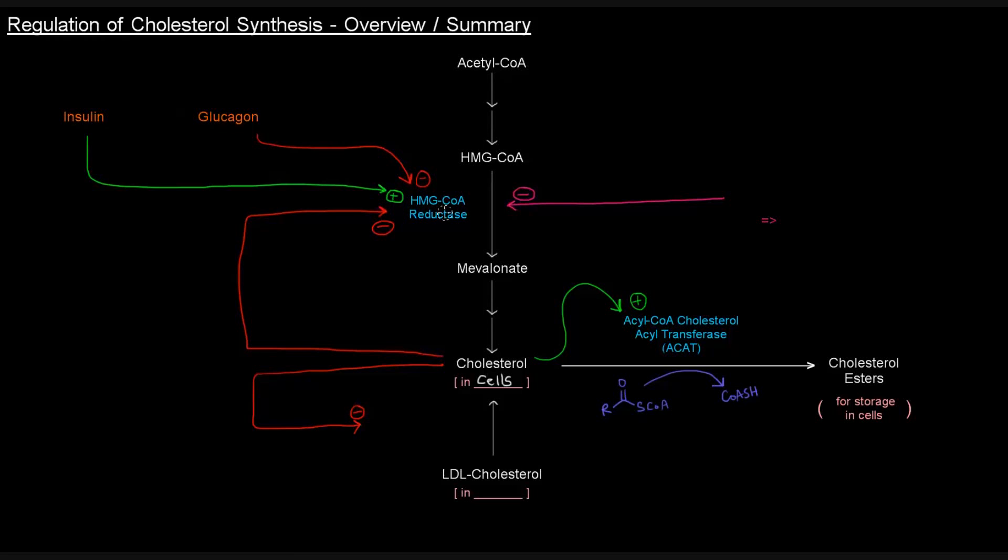HMG-CoA reductase is an anabolic enzyme in that it makes this lipid, so insulin would trigger it, glucagon would inhibit it. Another thing is that if cholesterol is around, cholesterol in cells is going to, of course, inhibit HMG-CoA reductase from even being available. We saw in the long-term video that the reductase availability via transcription of the gene to the translation of the mRNA to proteolysis, if there's cholesterol already around, that's going to inhibit the reductase from even being available to do its job.